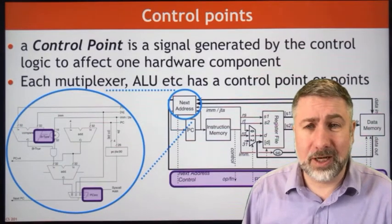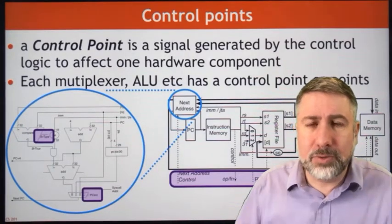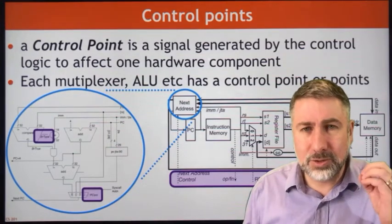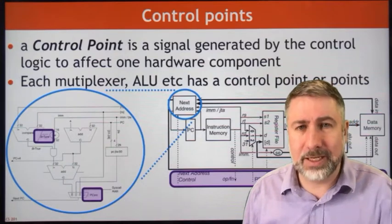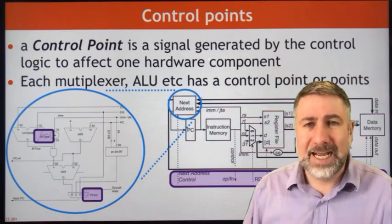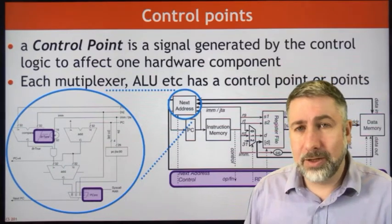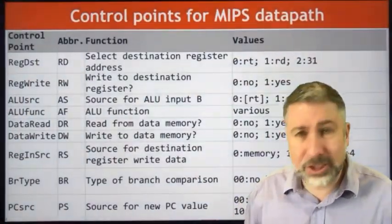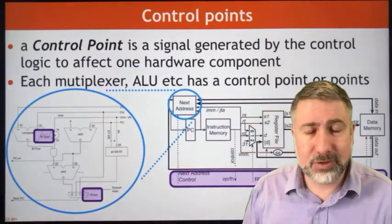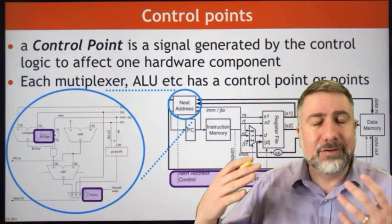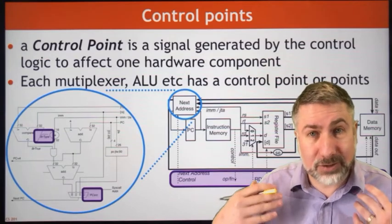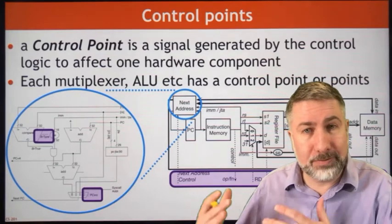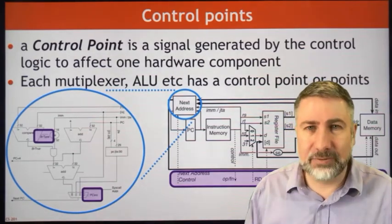The term 'control points' refers to inputs to the hardware used to specify a specific pathway through the data. Control points control part of the hardware and dictate what the hardware does. The MIPS machine we've built has a collection of control points, and for any given instruction we need to set the value of those control points so the multiplexers choose the appropriate data paths and the functionality is appropriate.